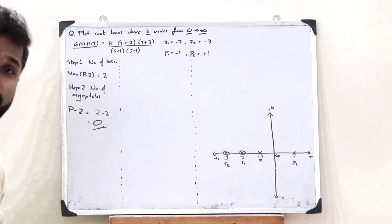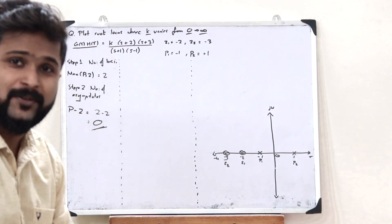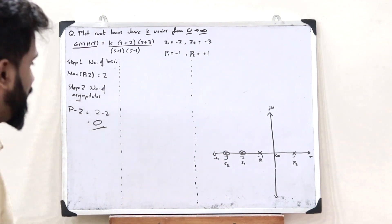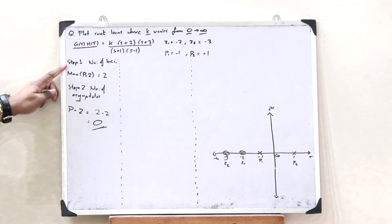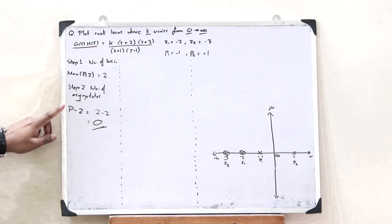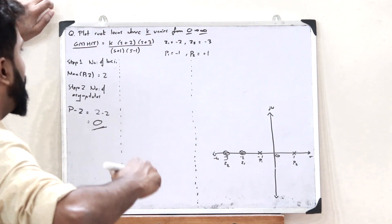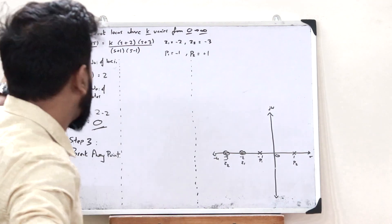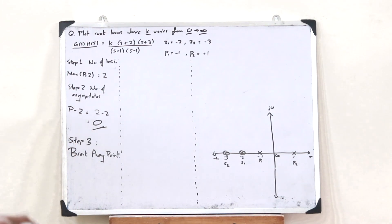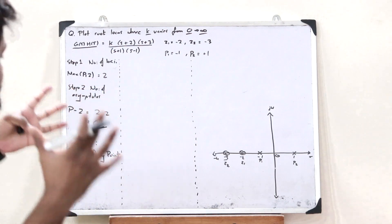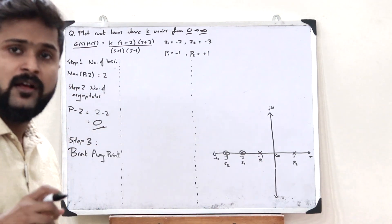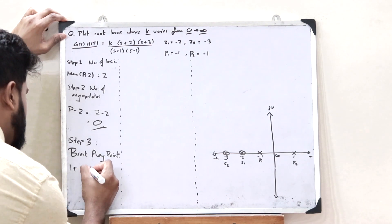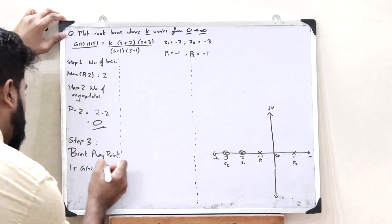Since there are no asymptotes, we don't need to find the angle of asymptotes. Next, we have to find the breakaway point. To find it, we first formulate the characteristic equation of this control system, which is 1 + G(s)·H(s) = 0.